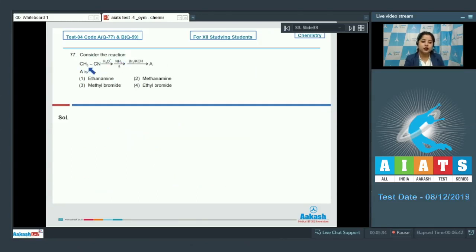Consider the reaction. In this case, ethane nitrile is first acidic hydrolyzed, a compound formed which reacts with ammonia and further heated to give a compound which reacts with BR2 in KOH, that is potassium hydroxide and a product so formed as A. We have to identify A. The options are ethane amine, methane amine, methyl bromide or ethyl bromide. Let's start the reaction.